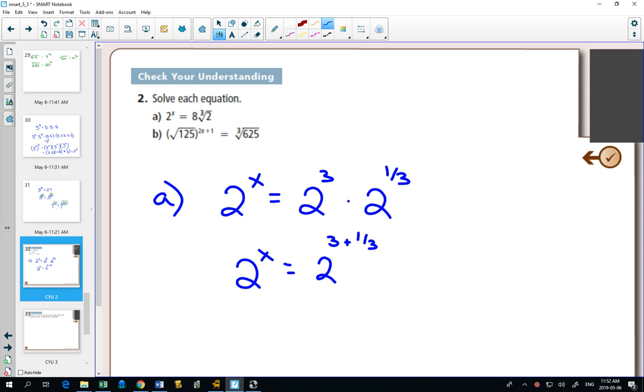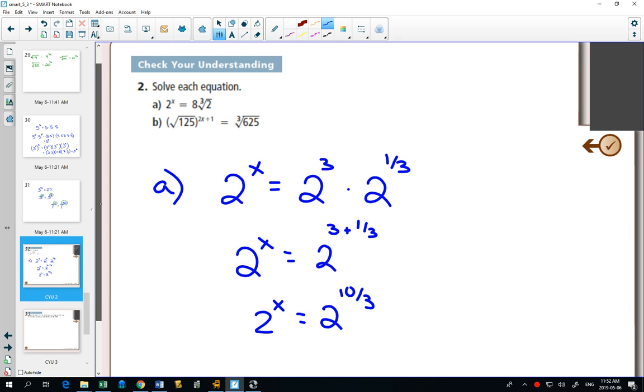So I would have 3 plus 1 3rd. How do I add fractions? I need a common denominator. Are you OK if I just say that's 9 over 3 plus 1 over 3 would give me 10 over 3.